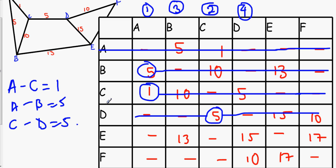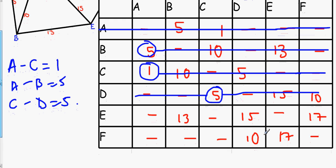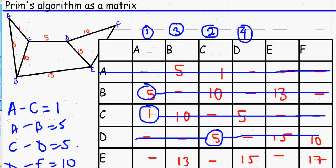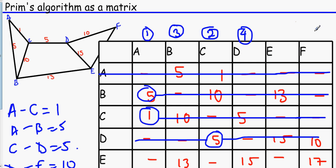So, number 4 is you need to find the shortest number which is 10. Yeah? So, that's D to F. D to F which is 10. And then you cross out the numbers on the side. And because this is row F, we need to pick column F as our fifth one.